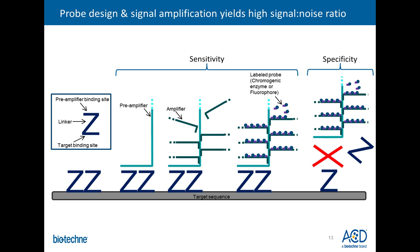Specificity is high and background is low because the signal depends on two Zs binding next to each other on the target sequence. If both Zs do not bind adjacent to each other, the preamplifier cannot form a stable hybridization and the amplification tree does not get built — consequently, there's no amplification of nonspecific hybridization, generating little to no background. A standard RNAscope probe consists of about 20 Z pairs designed to hybridize next to each other along a target region, but only a minimum of three Z pairs is needed to generate enough signal for molecular detection. This combination of probe design and signal amplification ensures a very high signal-to-noise ratio.